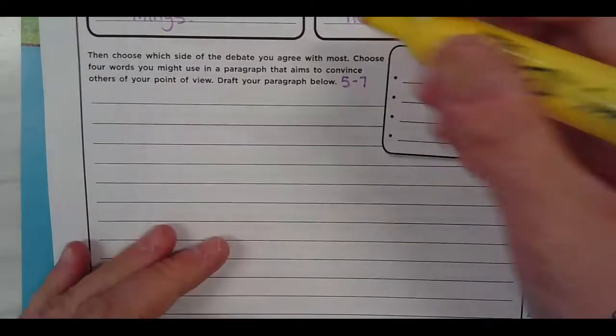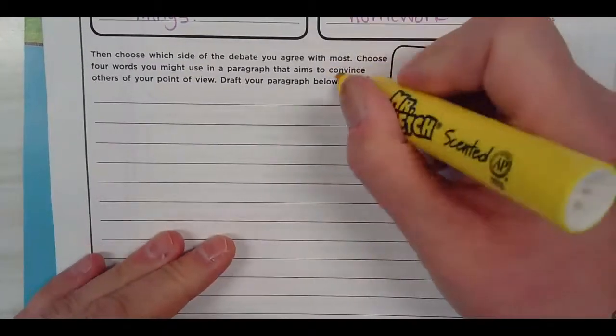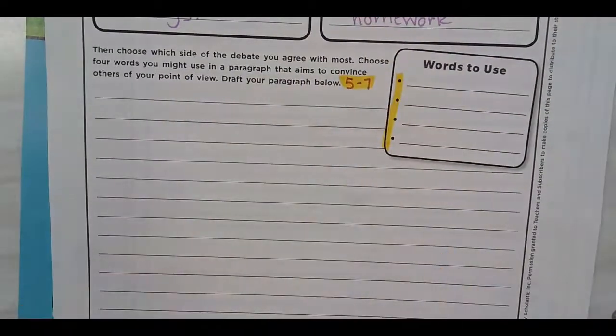So you are going to want to figure out which words you might want to use. Put them in the box. Five to seven sentences. Paragraph. This will be due tomorrow.